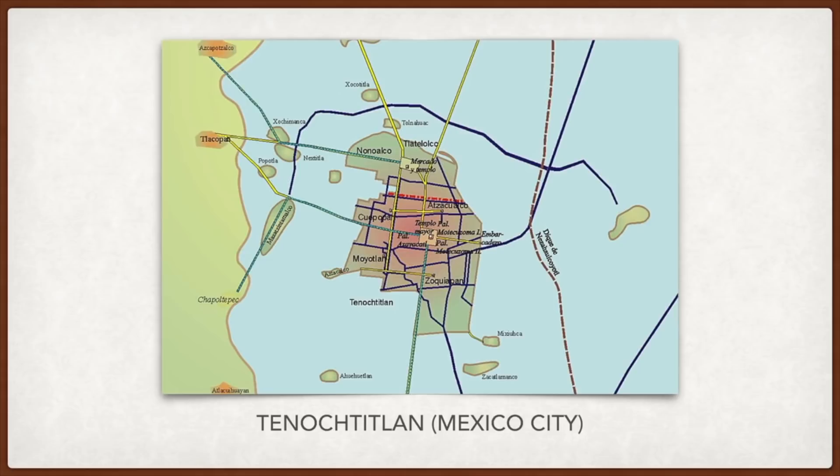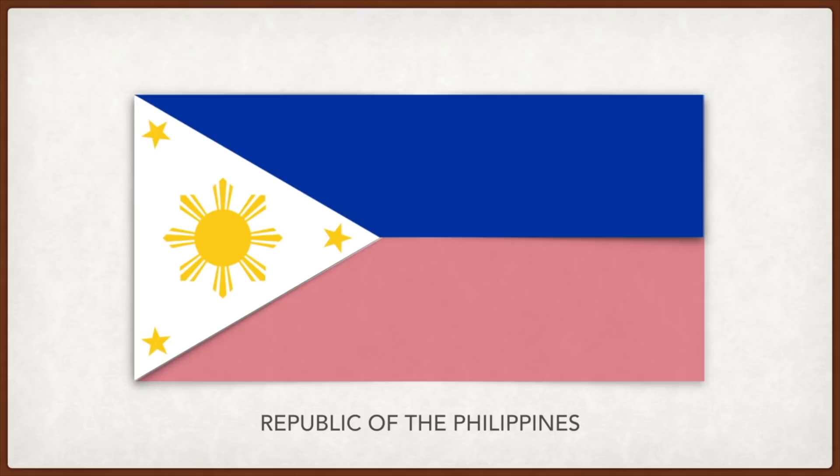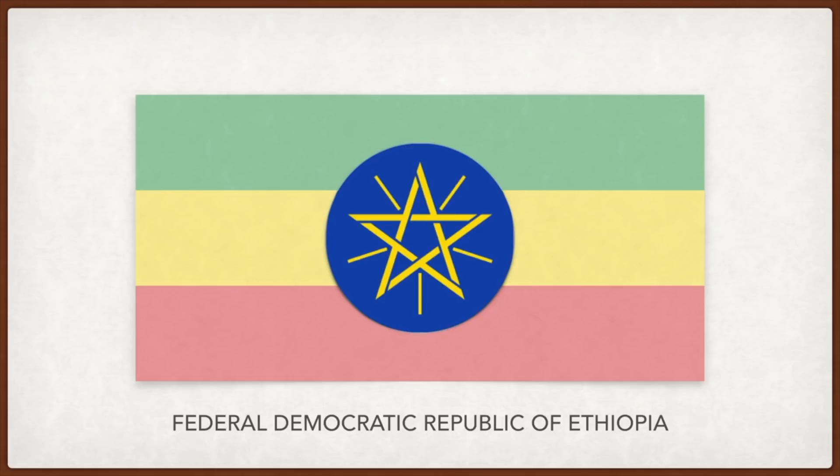The Philippines: the eight rays of the sun represent the eight provinces that first revolted against the Spanish government. The three stars represent the three island groups. The white triangle represents liberty, equality, and fraternity. The blue stripe represents peace, truth, and justice, and the red stripe represents patriotism and valor.